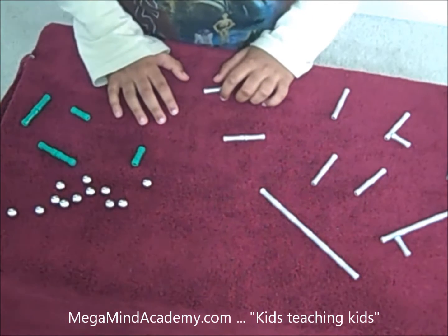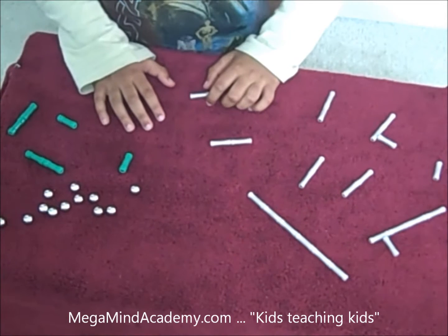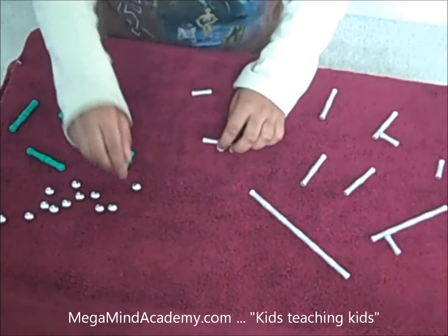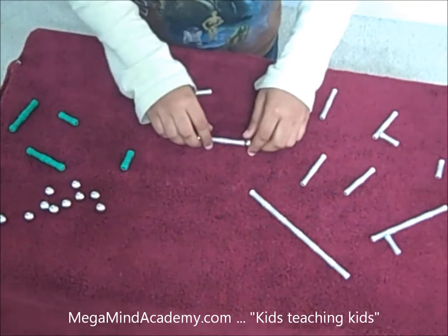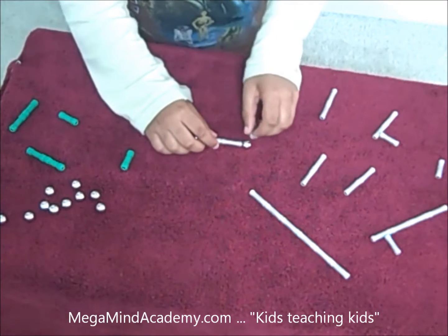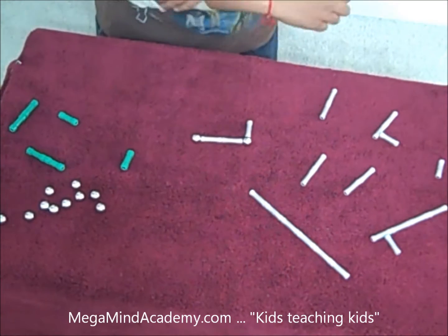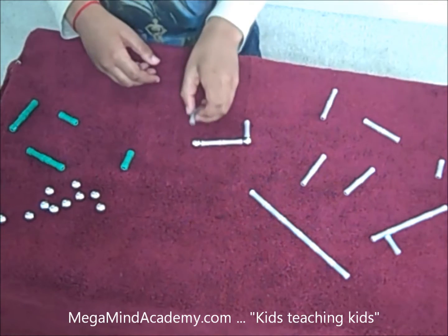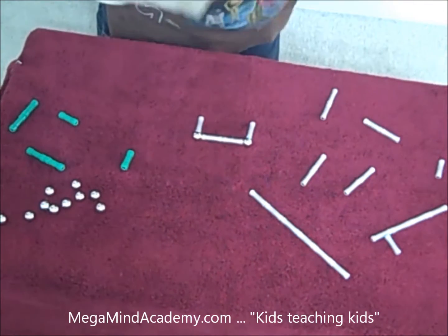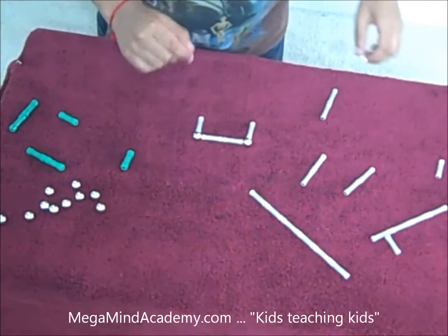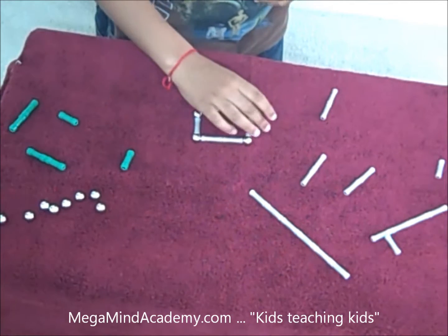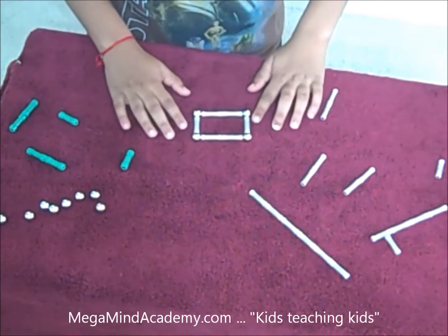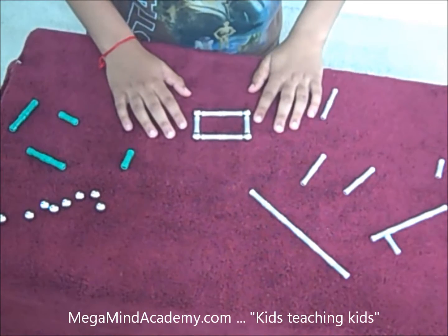To start making this rectangular prism, we're going to start making the rectangular prism's end. So let's make the rectangular prism's end. Now let's make the rest of the faces.